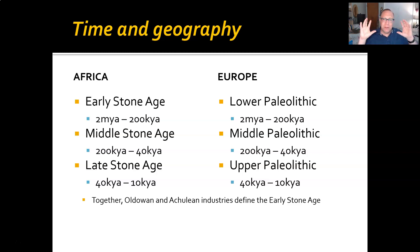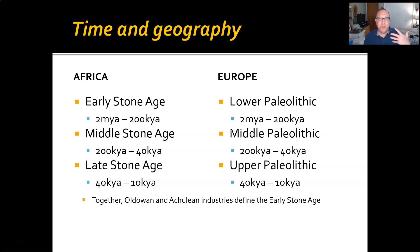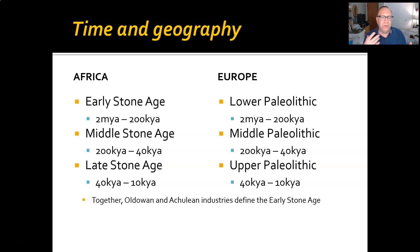We also talk about tools in terms of industries. Industry refers to a pattern of production techniques and tool forms that go together for a certain period of time. The first of these is the Oldowan industry, followed not long after by the Acheulean industry. Together, the Oldowan and the Acheulean make up the early stone age slash lower Paleolithic.